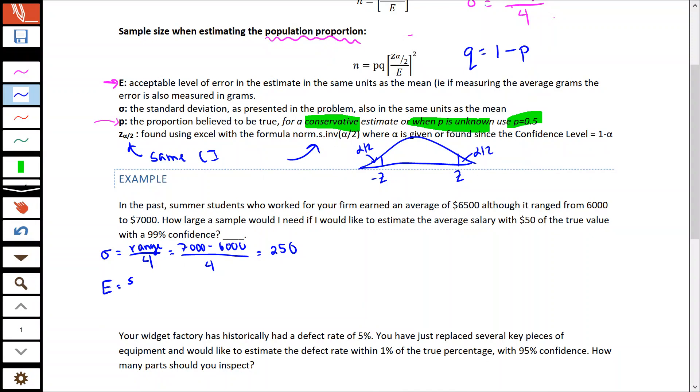Our error - we want to be within $50 of that true value, so we've got an error of 50. We need to find our Z value. So our Z of alpha divided by two, if it's a 99% level of confidence, we recognize that alpha is 1%.